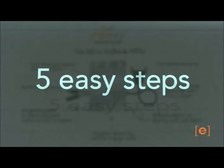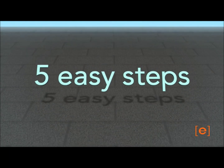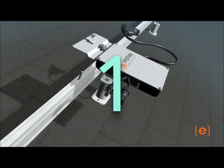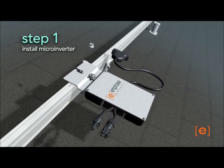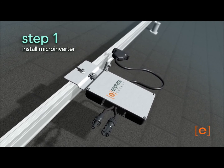There are five easy steps for installing the Enphase microinverter. First, install the microinverters in the appropriate locations on the racking.